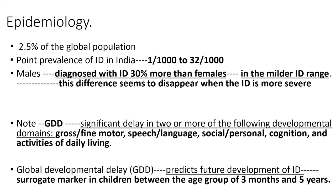Regarding epidemiology, the prevalence is 2.5% of the global population. Point prevalence of intellectual disability in India is 0.1 to 3.2%. Males are diagnosed with ID 30% more than females, and only in the milder range; this difference disappears when ID is more severe. Global developmental delay is defined as significant delay in two or more developmental domains including gross or fine motor, speech or language, social or personal, cognition, and activities of daily living. It works as a surrogate marker and predictive factor for future development of ID in children between 3 months and 5 years.